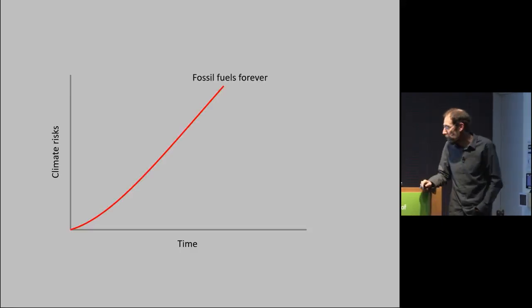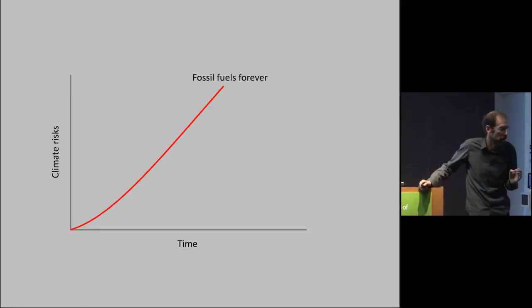How do these things fit together over time? First of all, if we just burn fossil fuels forever, even at a constant rate, so not with a rising rate, but if we kept the rate of fossil fuel combustion constant, then the climate risk grows without bound.